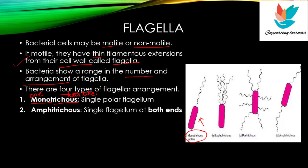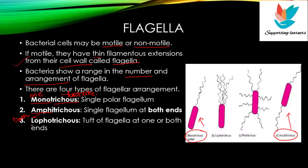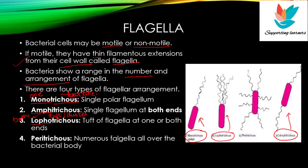The second type of arrangement is called amphitrichous arrangement. 'Amphi' means both and 'trichous' means hair-like, so there is a single flagella at both ends. The third type is lophotrichous arrangement — 'lopho' means tuft or cluster, so there are many flagella present in a cluster. The last type is peritrichous arrangement, where many flagella are uniformly present over the surface of bacteria. These are the four types of arrangements.